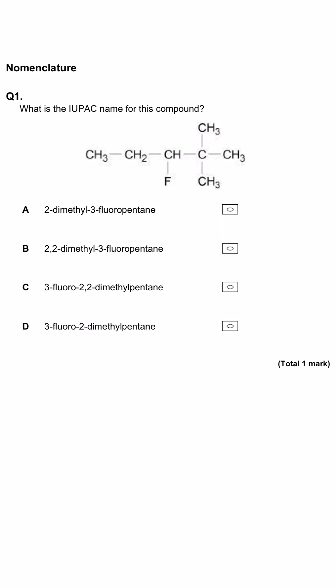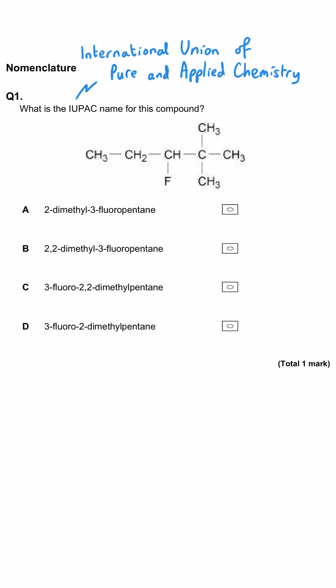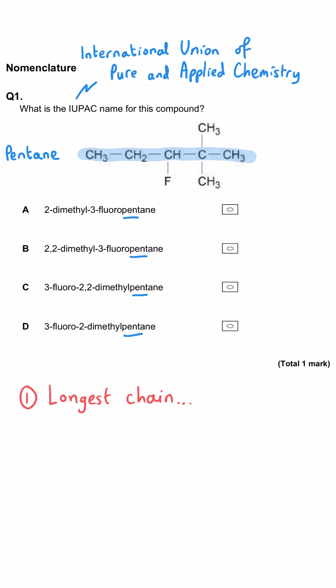Here we're being asked what the IUPAC name is for this compound. To work out the name we need to first look at what the longest carbon chain is in the substance. It's a chain of five so that makes this pentane. We can't rule anything out yet — they're all pentane. So we look at the branches: we have got two methyl groups sticking out of this molecule, so this is going to be called dimethylpentane.